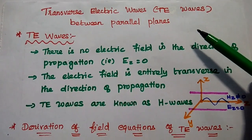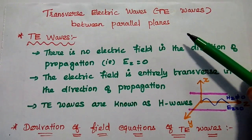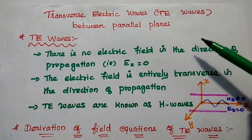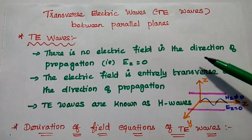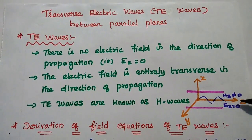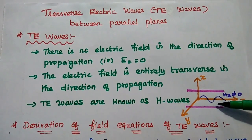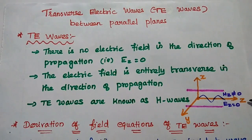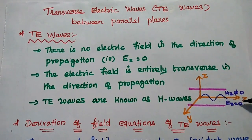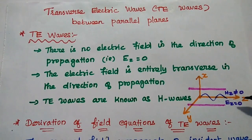Dear students, now we are going to derive the field expressions for transverse electric waves guided by parallel planes - simply TE waves. Let's start with the definition of TE waves. TE waves are the waves in which the electric field strength is entirely transverse in the direction of propagation. For example, if the wave is propagating in the Z direction, there is no electric field in the direction of propagation - that is, EZ is equal to 0. The electric field is entirely transverse in the direction of propagation.